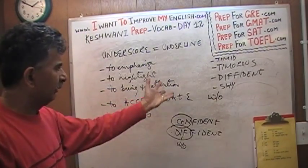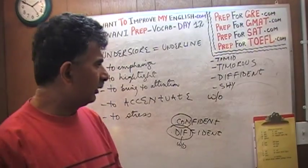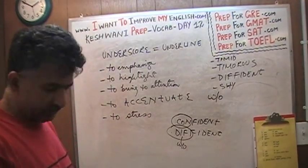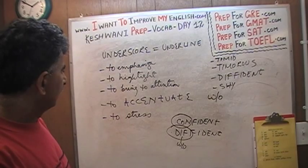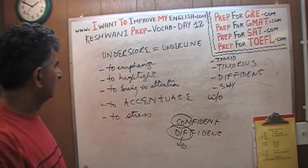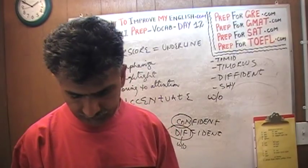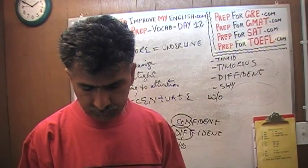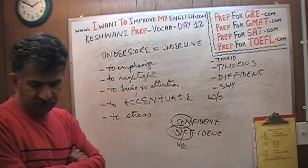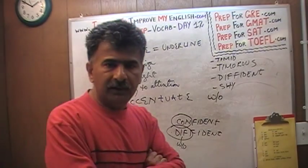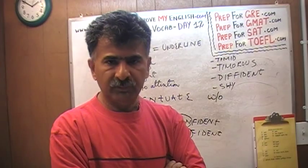That was it for today — and actually we got a whole bunch of bonus words: accentuate, timorous, diffident. I'll cover all of these words in the future. That's the end of today's lesson. Every day we learn a few words here and there — these words come out of nowhere. There is no rhyme or logic to it, there is no confluence to it.